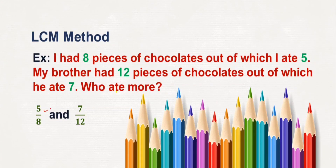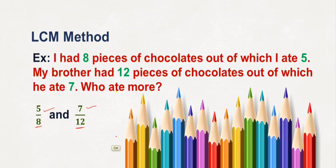If the denominators were the same, we could just look at the numerators and compare. But as the denominators are different, we'll have to take the LCM of the denominators. We have already learnt how to find the LCM of given numbers. In the same way, we'll have to find the LCM of 8 and 12, which are the denominators here.